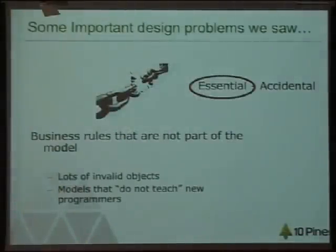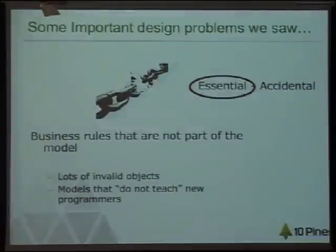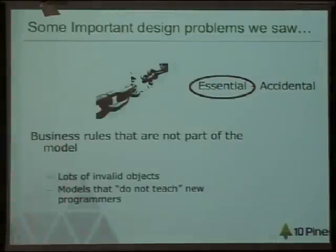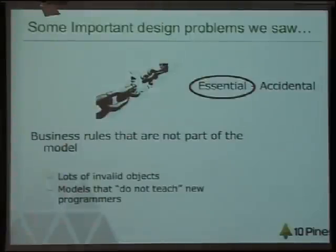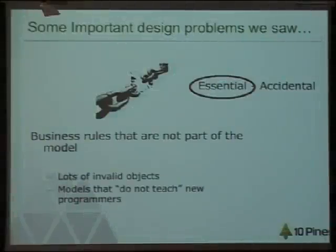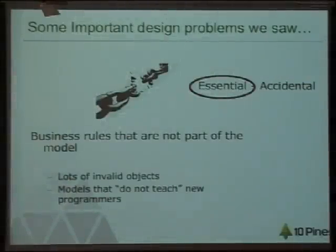Other problems we usually see in systems is that business rules are not clearly modeled or they are spread around the system. For example, yesterday Esteban was giving a talk about Reef and he showed that you can define a text field to be required — but that's a business rule. That business rule should be in the model, not in the UI. The UI should get that business rule from the model.